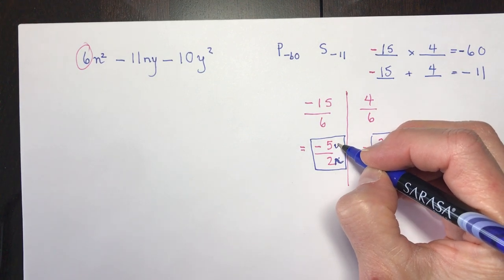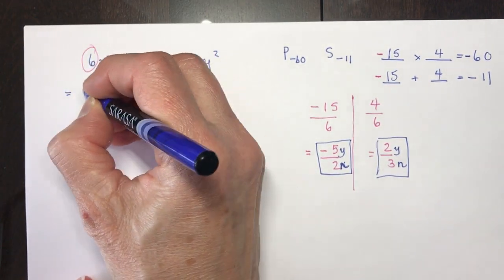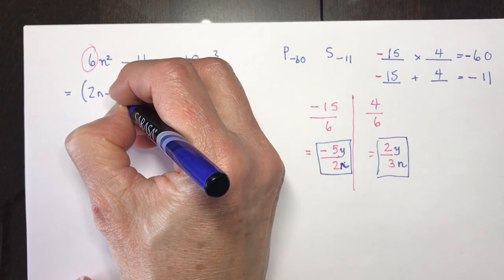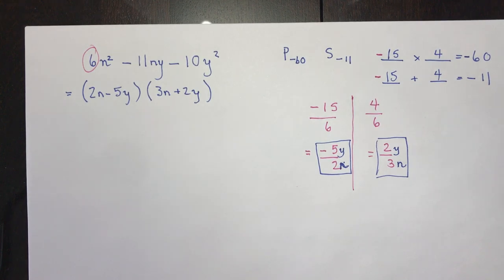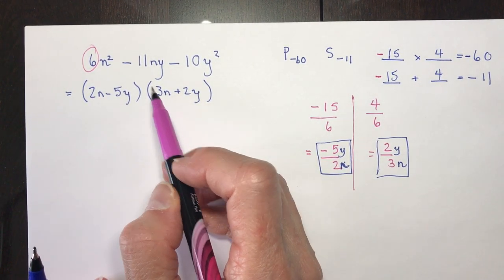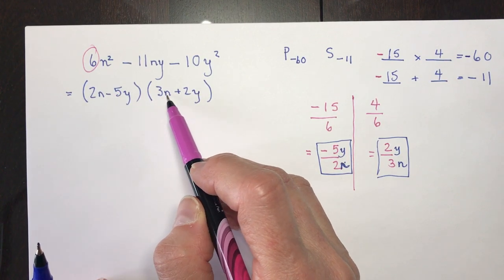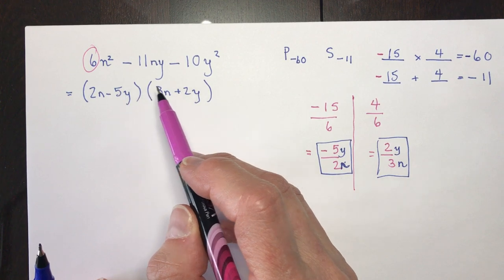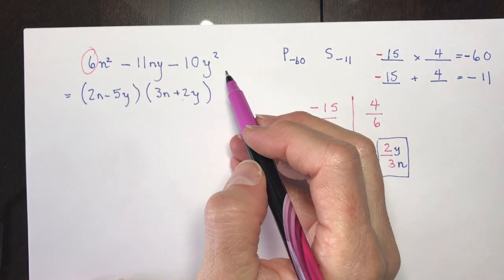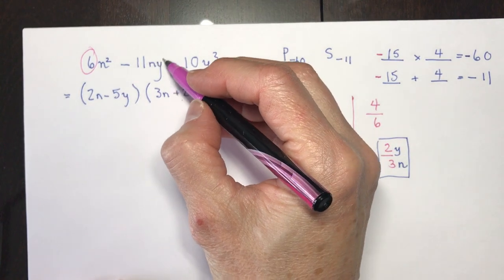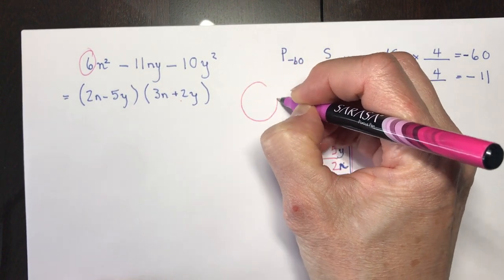So I just put a y here — that's all I need to do to make this expand properly. So we have 2n minus 5y, and 3n plus 2y. Let's check: 2n times 3n is 6n squared, 2n times 2y is 4ny, then minus 15ny gives minus 11ny, and minus 5y times positive 2y is minus 10y squared. So don't get all freaked out because you've got two variables in the equation — just kind of forget about the second one, work with the numbers, and slap those variables in at the end.